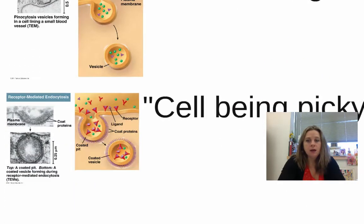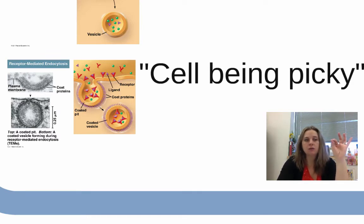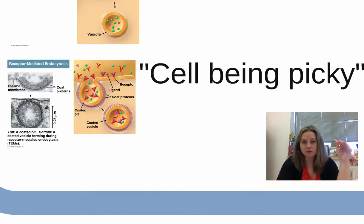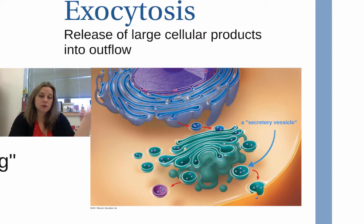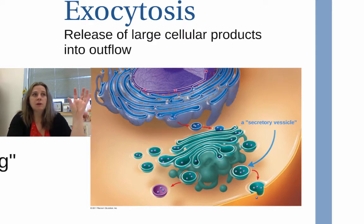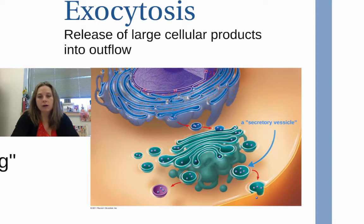If cells are being selective, they coat vesicles in a way that allows them to pick very specifically what they want to take in using particular receptors — this is receptor-mediated endocytosis. Then there is exocytosis, where the cell exports large amounts of material. Molecules packaged by the Golgi apparatus travel in secretory vesicles to the cell membrane, attach, and push the material out.